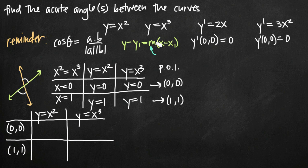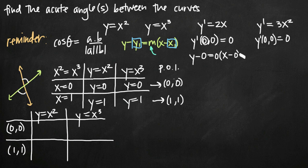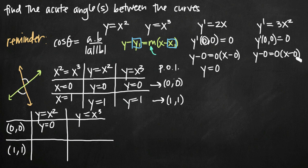I plug in my slope of 0 and point (0, 0). I get y minus 0 equals 0 times x minus 0, which simplifies to y equals 0. That's my tangent line equation for the first box. Over in the second box for y equals x cubed at (0, 0), I again have a slope of 0 and a point (0, 0), so y minus 0 equals 0 times x minus 0, which also simplifies to y equals 0. Both tangent lines at (0, 0) are y equals 0.